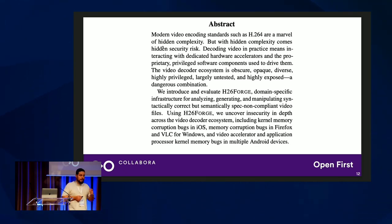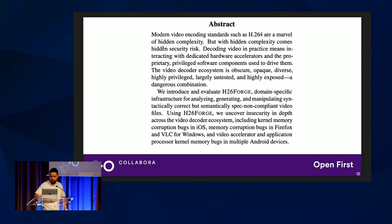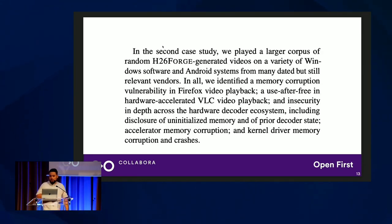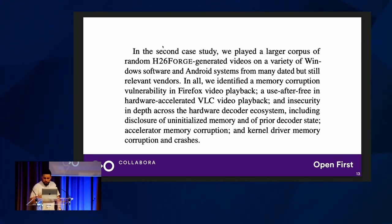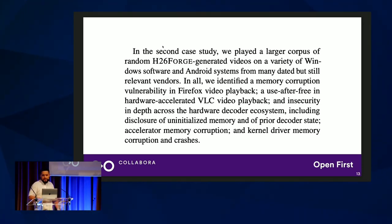H264Forge can reliably create a video stream that, once you put it through Chromium or any user space program for video decoding, will eventually cause a crash somewhere. They go further: in a case study, they played videos from H264Forge on a variety of Windows software and Android systems, and identified a memory corruption vulnerability in Firefox, a use-after-free in hardware-accelerated VLC video playback, and security issues across the hardware decoder ecosystem — including disclosure of initialized memory, accelerator memory corruption, and kernel driver memory corruption and crashes.